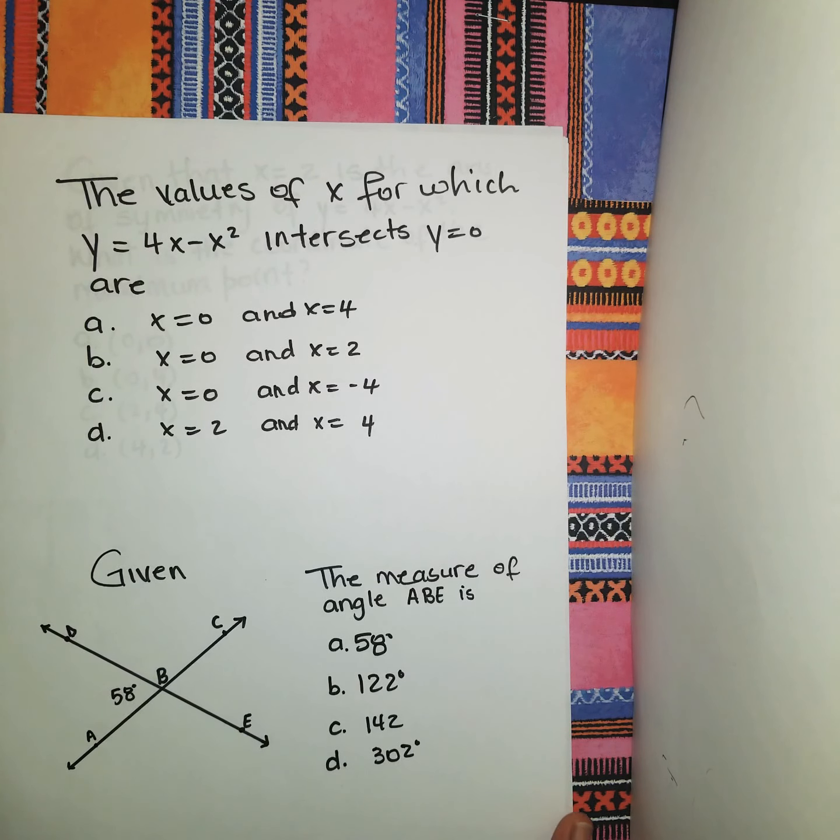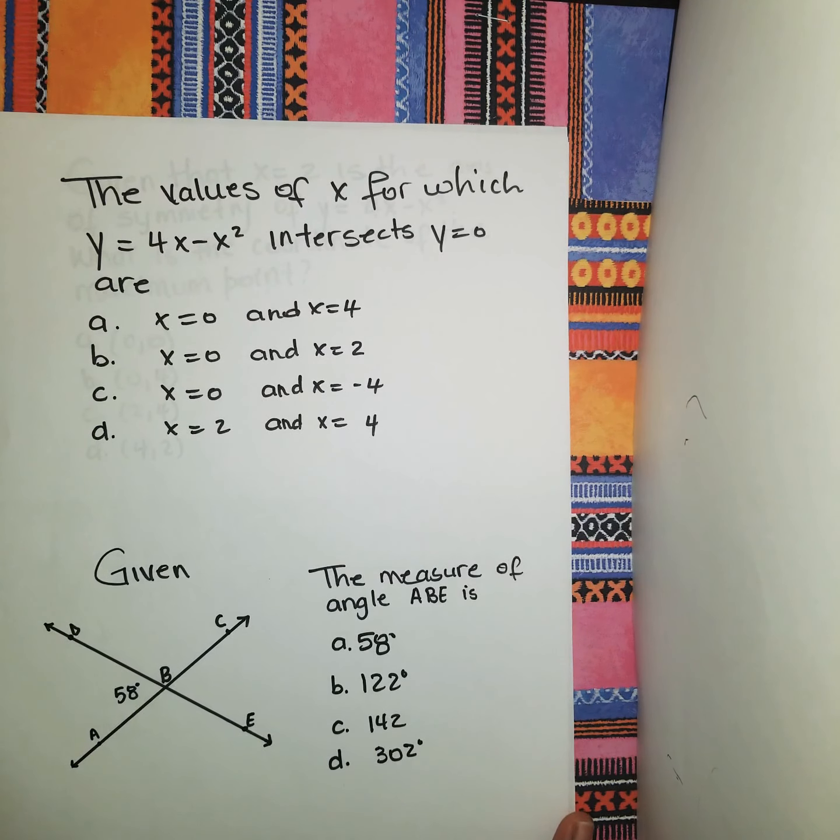The first one is: the values of x for which y = 4x - x² intersects y = 0. We have a list of answers here, guys. First, we need to know what they're asking us for. We were given a quadratic in the form 4x - x².